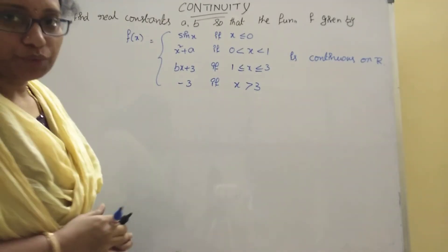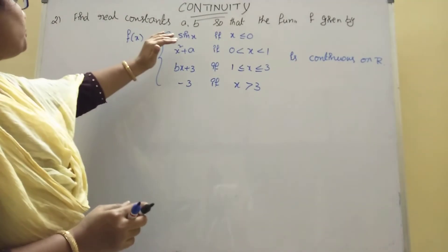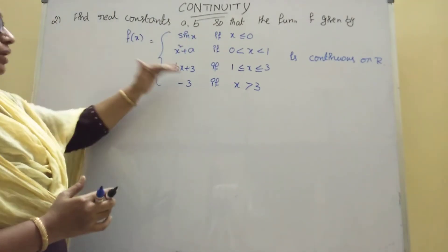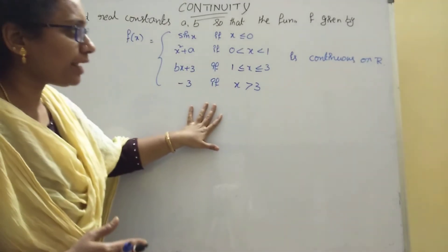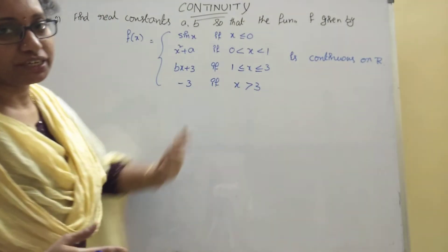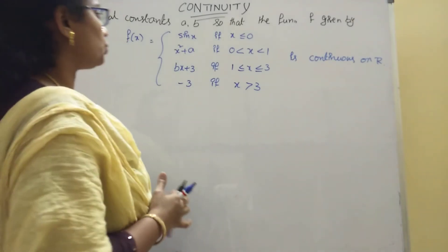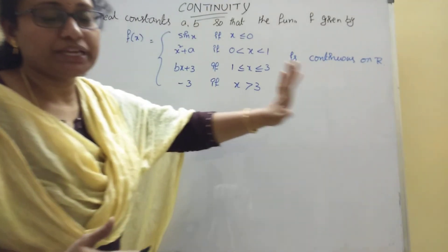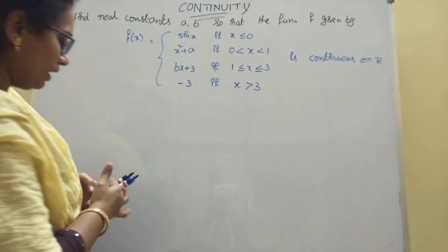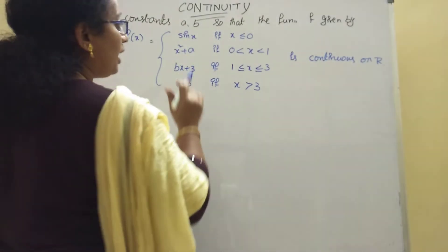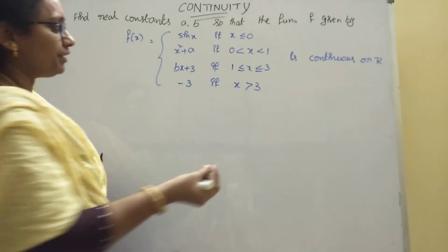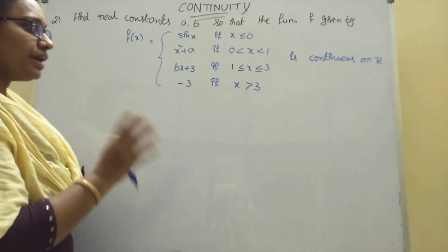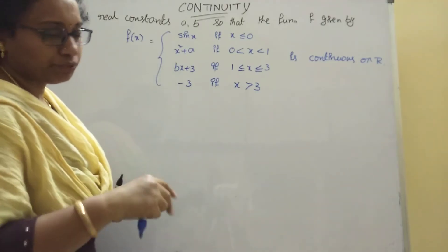Next problem: find real constants a and b so that the function f is continuous. The question asks us to find the values of a and b such that f is a continuous function. We will use: left hand limit equals right hand limit at the points of interest to get the relations.